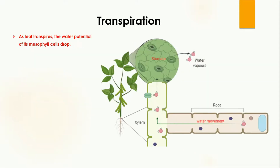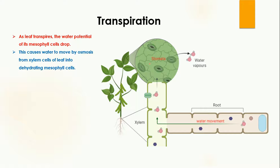Now, how does transpiration actually work? As the leaf transpires, the water potential of its mesophyll cells drops. Here in this diagram, this part is the leaf and these are the cells of the leaf. When water moves out of the leaf it creates a space, and the water potential — meaning the concentration of water in the cells — decreases. Water then moves by osmosis from the xylem cells into the dehydrating mesophyll cells, from higher water potential towards lower water potential.